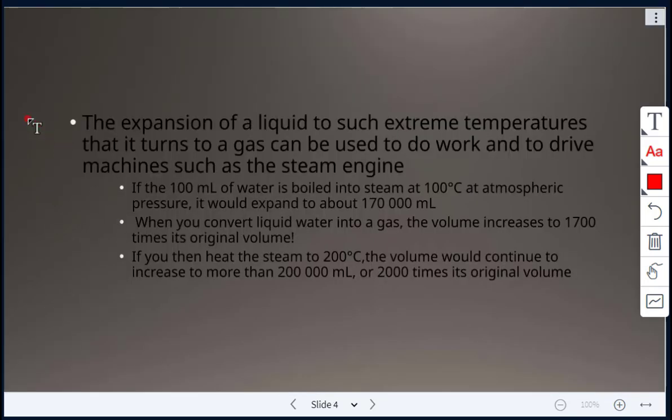The expansion of a liquid to extreme temperatures turns it to a gas that can then be used to do work and to drive machines, such as the steam engine. For example, if 100 milliliters of water is boiled into steam at 100 degrees Celsius at atmospheric pressure, it would expand to about 170,000 milliliters. When you convert liquid water into a gas, the volume increases to 1,700 times its original volume. If you then heat the steam to 200 degrees Celsius, the volume would continue to increase to more than 200,000 milliliters, or 2,000 times its original volume.